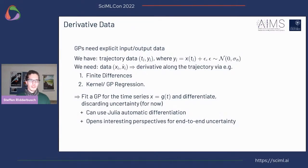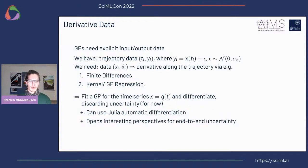The first challenge with Gaussian processes is that we don't have derivative data available, but GPs need explicit input-output pairs. We have trajectory data with time steps and states, potentially with noise, but what we need is states and gradient observations. A potential option is to differentiate along the trajectory. We could do this with finite differences, or via kernel or GP regression. Since this is a talk about GPs, let's fit a GP to our time series. Because GPs are closed under linear operators and differentiation is a linear operator, we can analytically differentiate that time series and get derivative information. This is where the many automatic differentiation frameworks in Julia really come in handy.